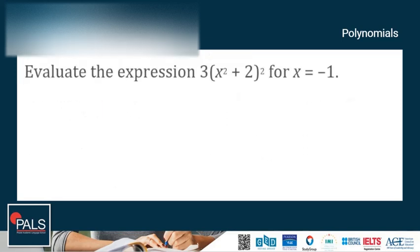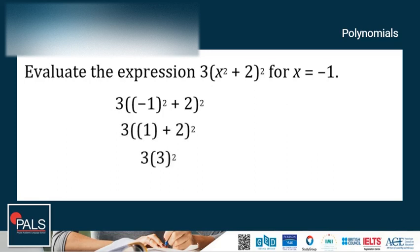Let's try another example. Evaluate the expression 3(x + 2)² for x = -1. Again, replace x by the given value, which is negative 1, and then follow the order of operations, starting with exponents, and then multiplication. And the final answer is equals to 27.